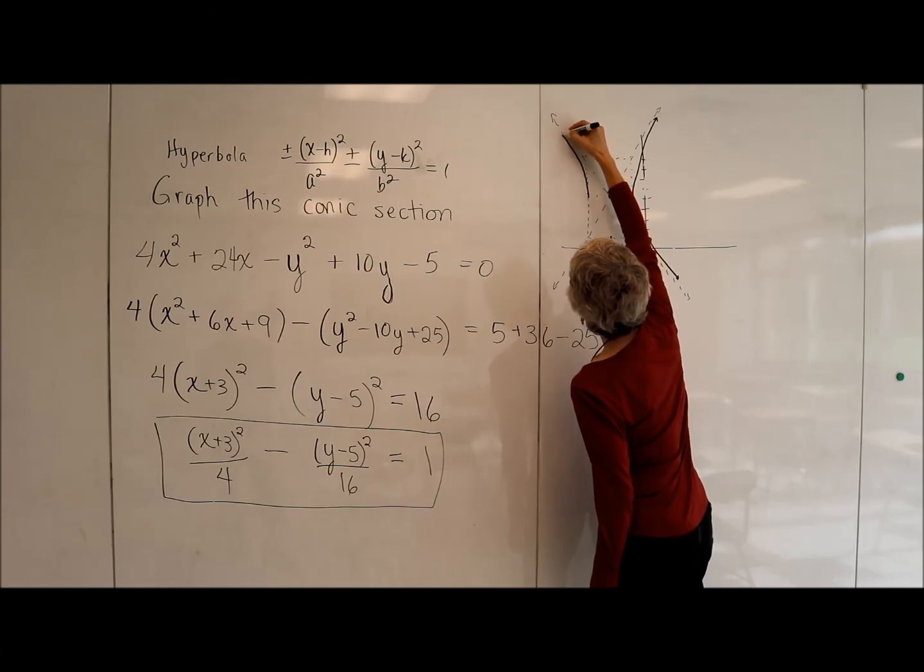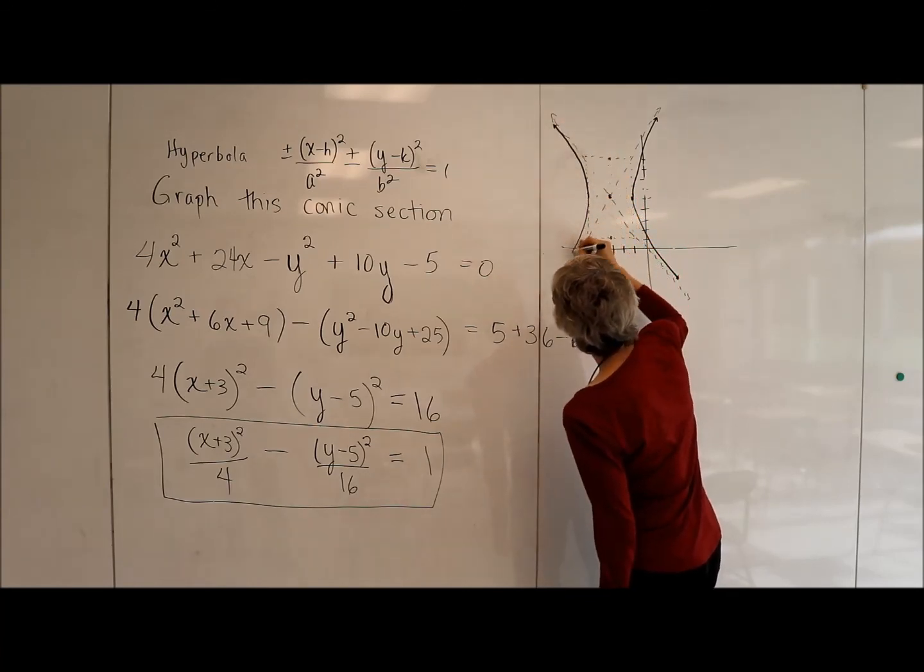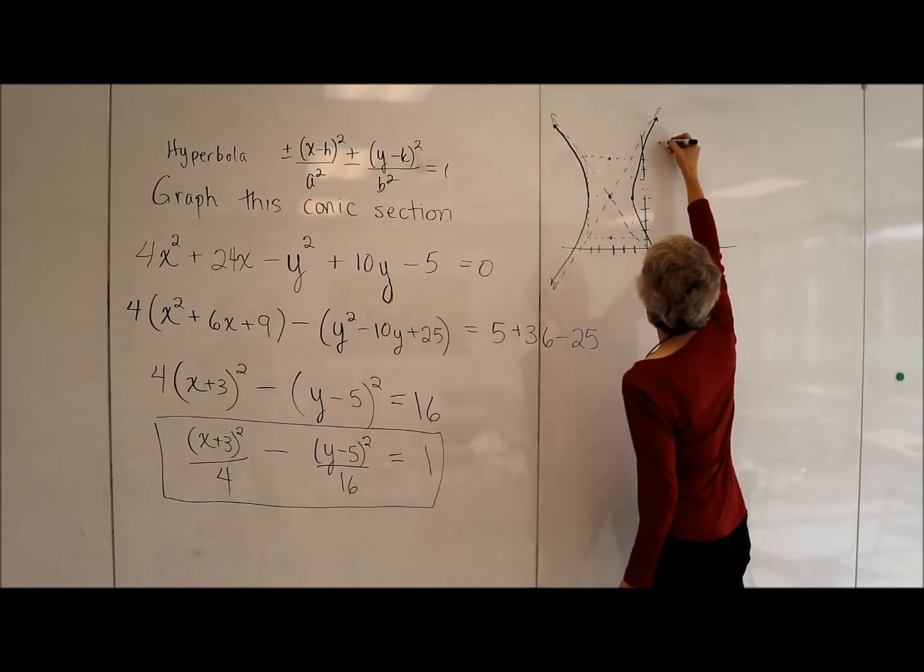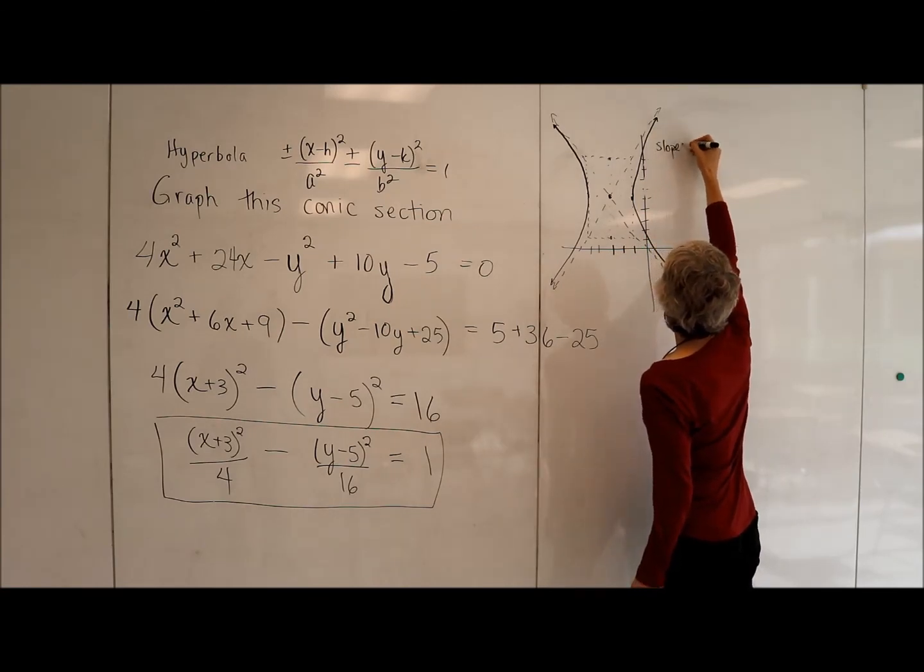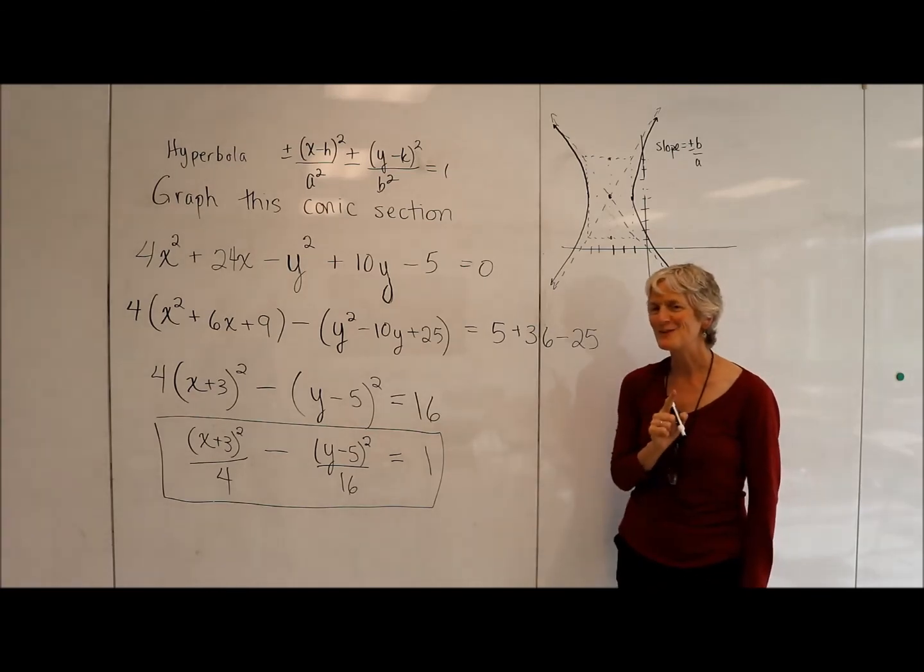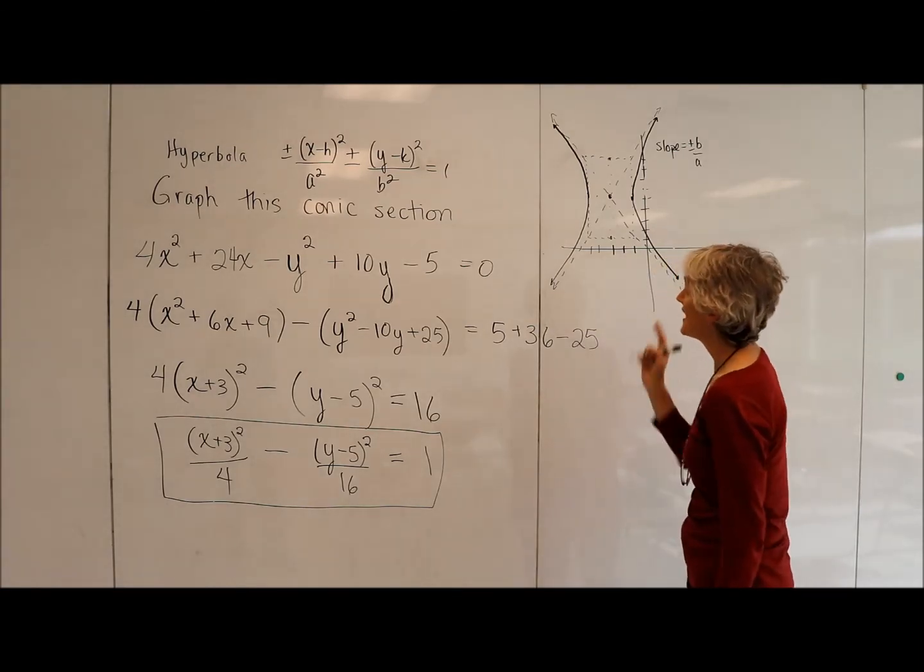So I'm getting infinitely close to those slant asymptotes. Those slant asymptotes have a slope of plus or minus b over a. And you can think about why that is so. It's kind of interesting.